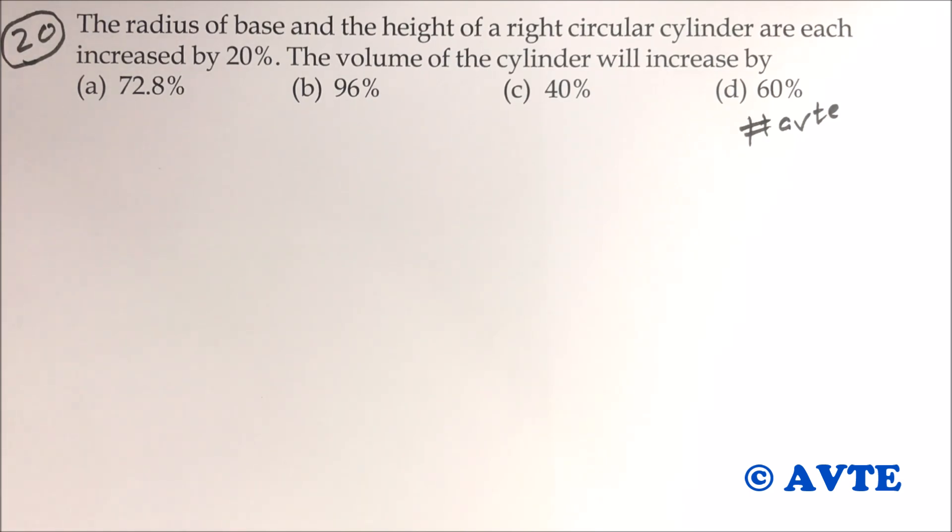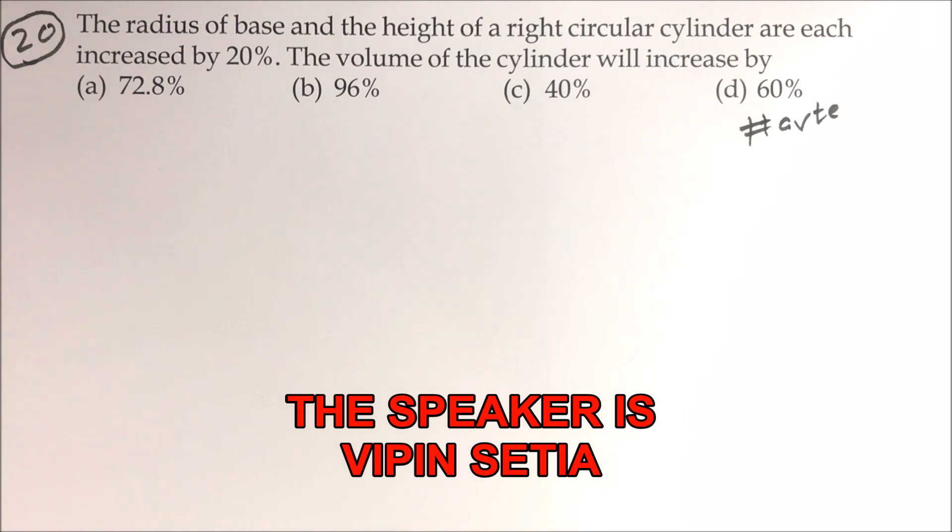If you haven't done so, press the red button and subscribe. It gives us motivation. So guys, this is a beautiful question. The radius of the base and the height of a right circular cylinder are each increased by 20%.